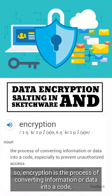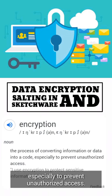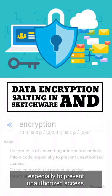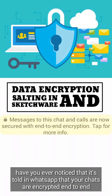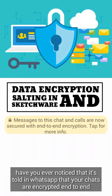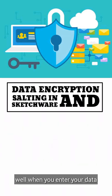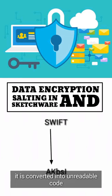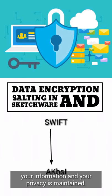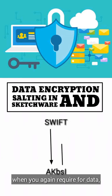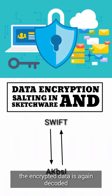Encryption is the process of converting information or data into a code, especially to prevent unauthorized access. Have you ever noticed that it's told in WhatsApp that your chats are encrypted end to end? When you enter your data, it is converted into unreadable code within your device so that no one can read your information and your privacy is maintained. When you again require the data, the encrypted data is again decoded.